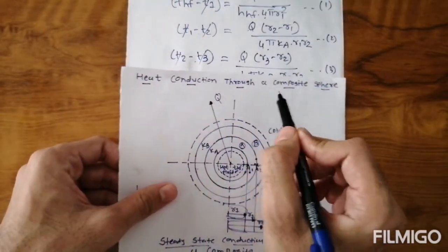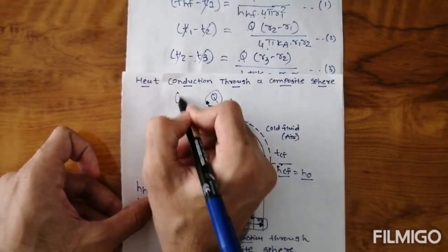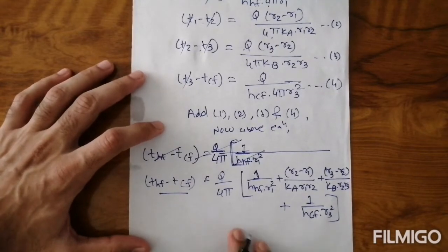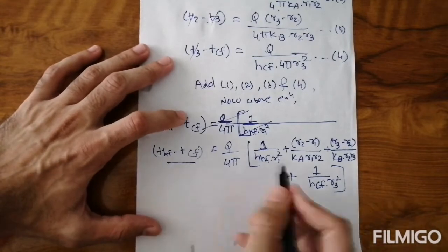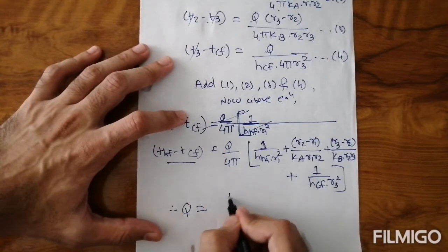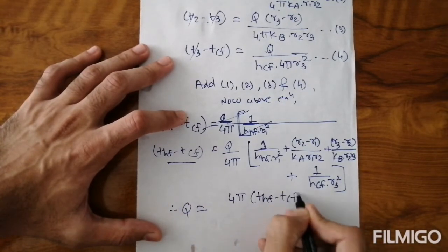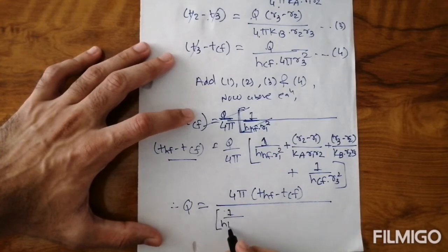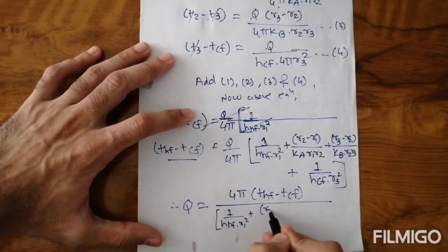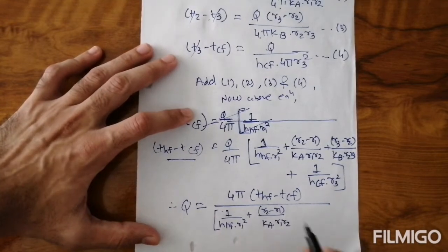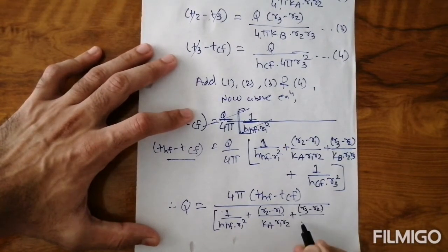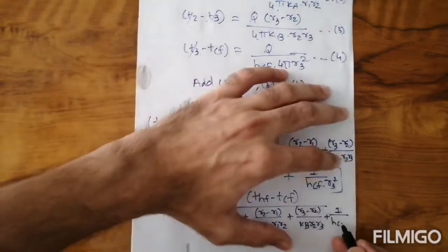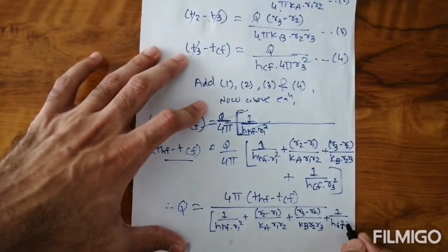We require the rate of heat transfer Q, so rearranging: Q = 4π(THF − TCF) / [1/(HHF × R1²) + (R2 − R1)/(KA × R1 × R2) + (R3 − R2)/(KB × R2 × R3) + 1/(HCF × R3²)]. That is the rate of heat transfer equation for the composite sphere with two layers.